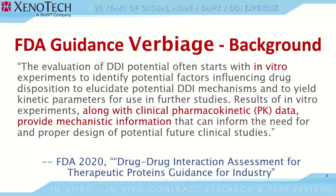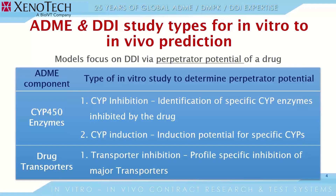In today's talk, I'm going to focus on the DDI risk models proposed by the US FDA. Such models are also recommended by EMA and PMDA, though there are slight differences in the equations recommended by these three regulatory agencies. The main types of in vitro ADME studies required for predicting the in vivo clinical DDI potential are those focusing on perpetrator potential: the CYP inhibition study, the CYP induction study, and the transporter inhibition study.